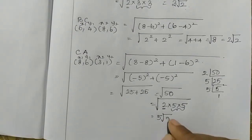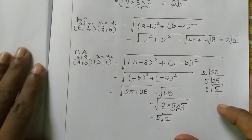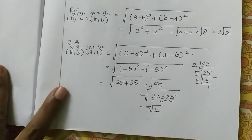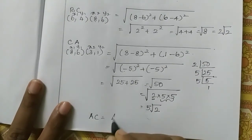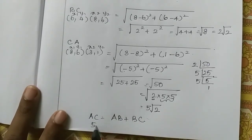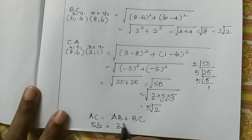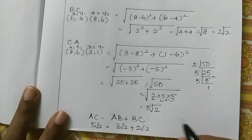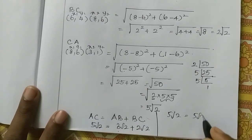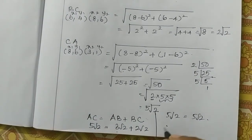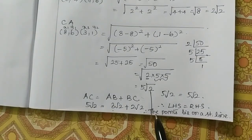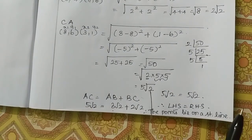Now AB = 3√2, BC = 2√2, and AC = 5√2. We check: AC = AB + BC → 5√2 = 3√2 + 2√2 = 5√2. The left-hand side equals the right-hand side. Therefore, the points A, B, and C lie on a straight line. That's all.